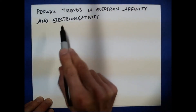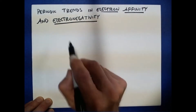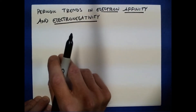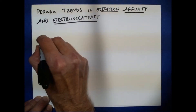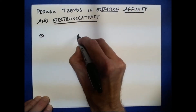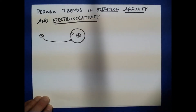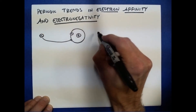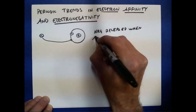In this video, we're going to discuss periodic trends in electron affinity and electronegativity. These are two very closely related ideas. Electron affinity is the energy released when an electron is drawn into an atom. If we imagine an electron and a nucleus, we can think about that electron being captured into the orbit of that particular nucleus. The energy released in this case is called the electron affinity — the energy released when an atom gains an electron.